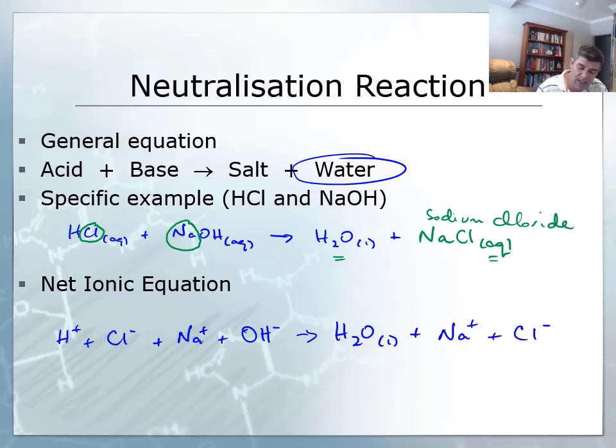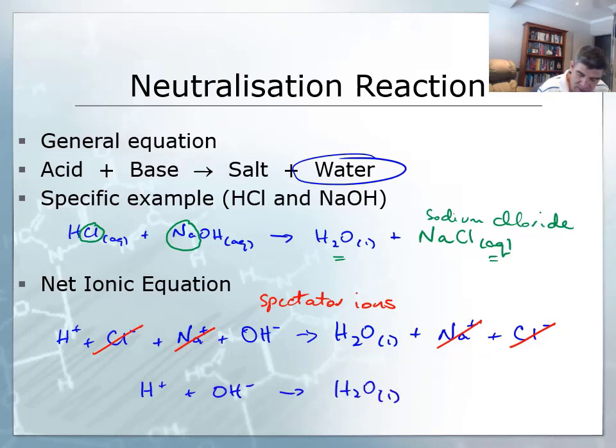Now, we know that where we have spectator ions, we can eliminate them from both sides of our equation. So we've got Cl- here and a Cl- here and an Na+ here and an Na+ here. What this does is it leaves us with a net ionic equation of H+ plus OH- giving H2O liquid. And this is our neutralization reaction.